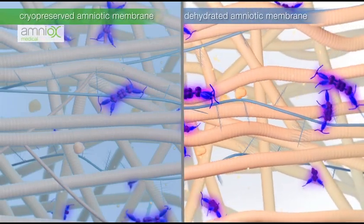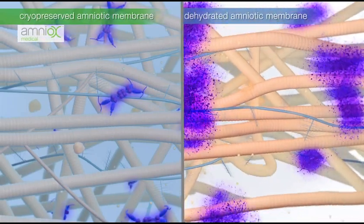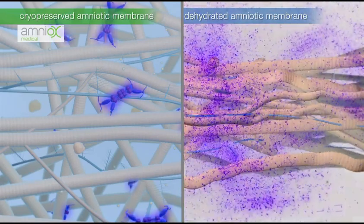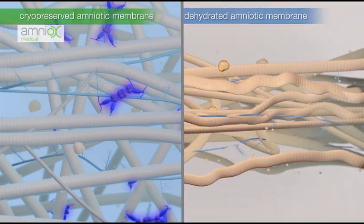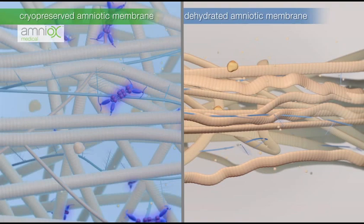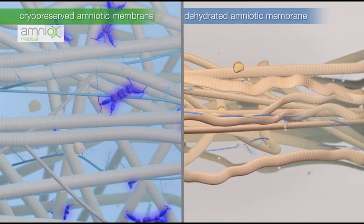Alternative processing methods that involve dehydration degrade the critical biology present in amniotic membrane, limiting its regenerative capabilities and its viability as a cell matrix.